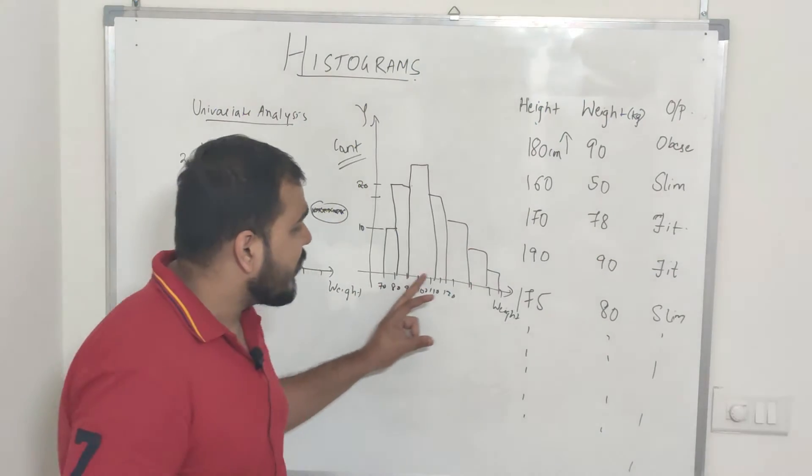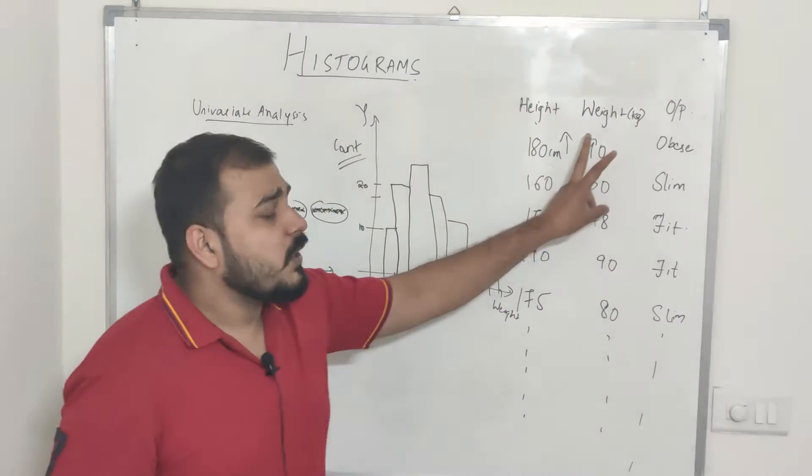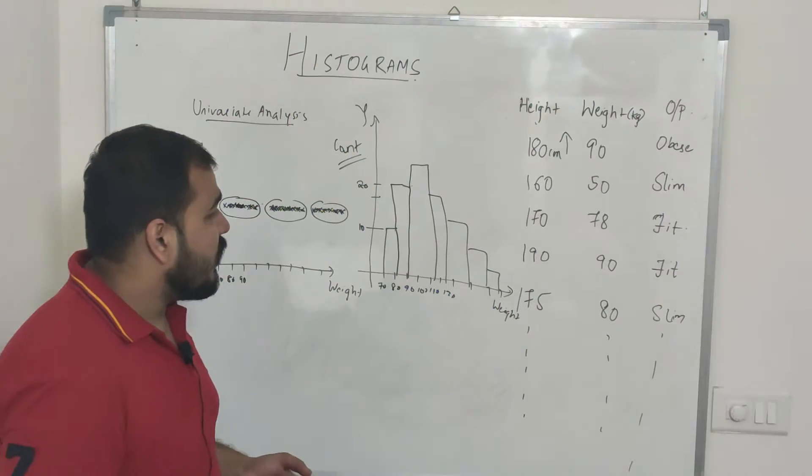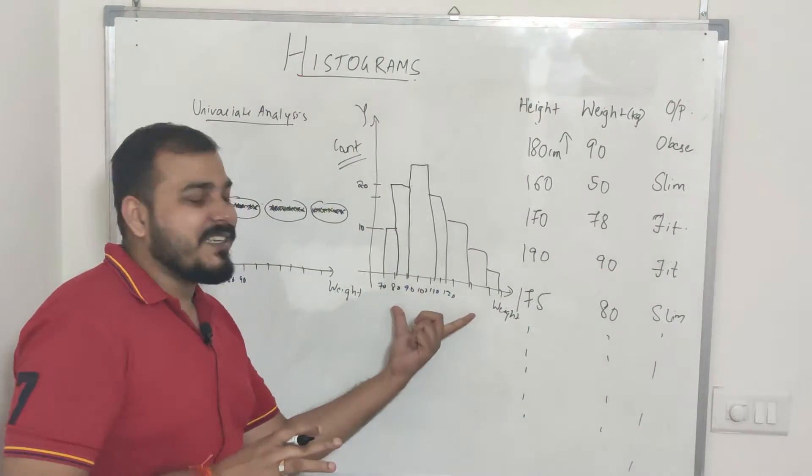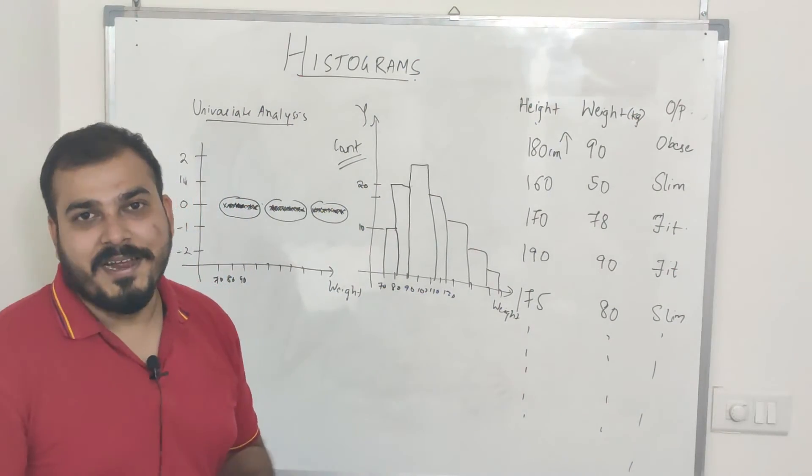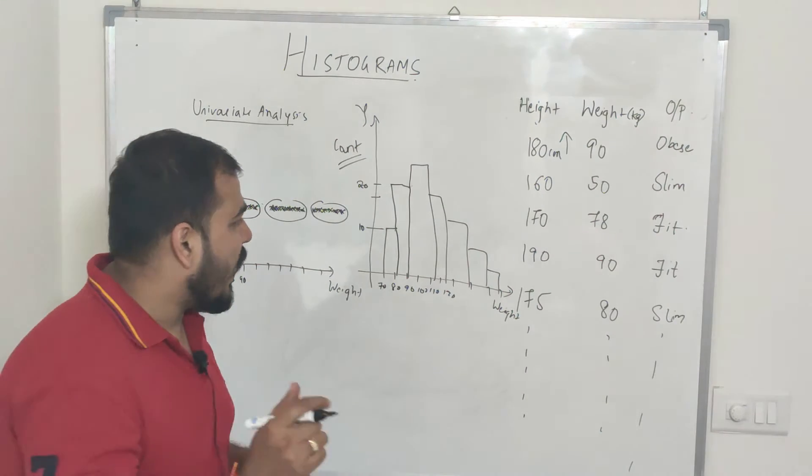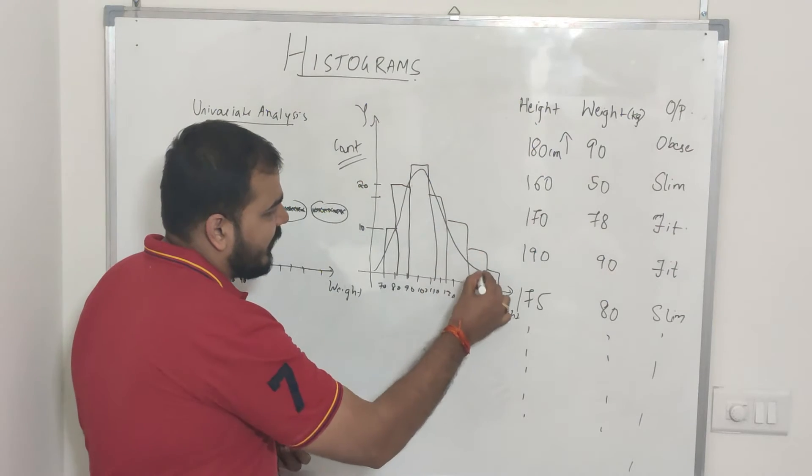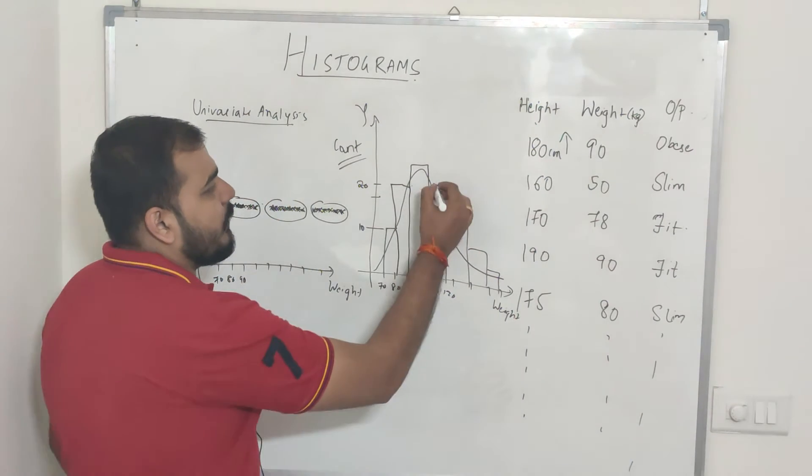Always remember, whenever you are plotting this histogram it will be with respect to one feature. Yes, you can combine three to four features but you basically have to create multiple diagrams. This is also important because if you see this, when I try to create a figure like this, this looks like a bell curve.